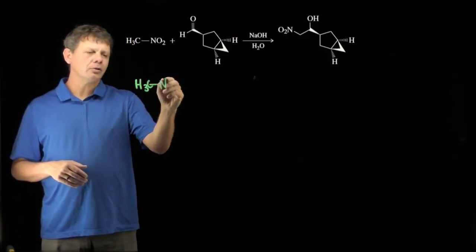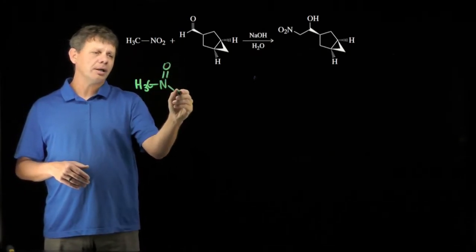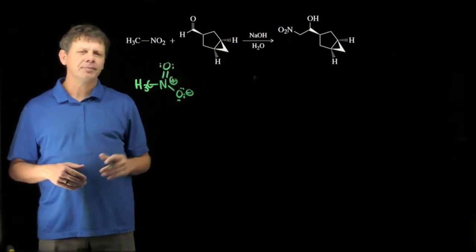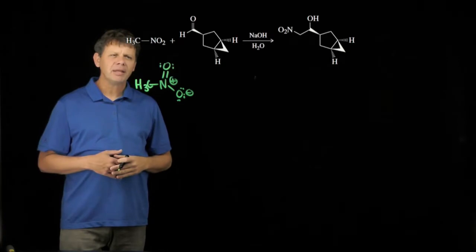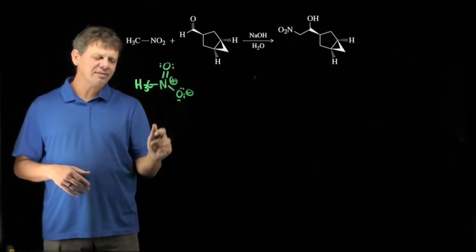So if we draw the Lewis structure we would have a nitrogen oxygen double bond, a negative charge on this oxygen, and a positive charge on this. Now if we look at that structure what does that look familiar to? What is that similar to?